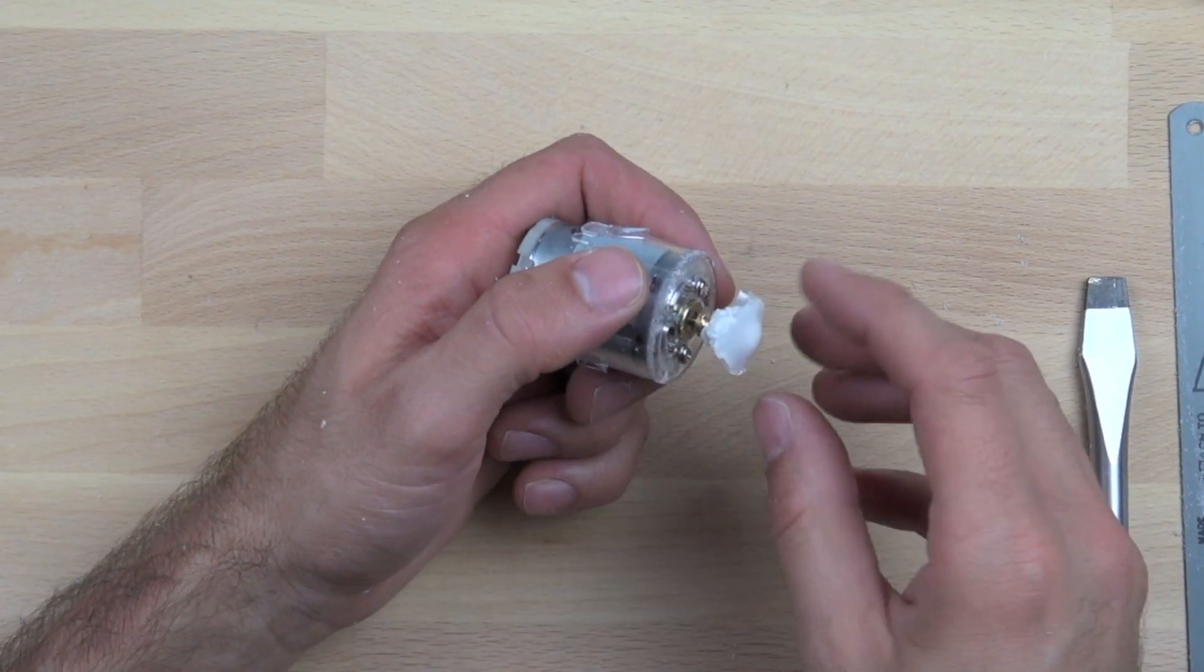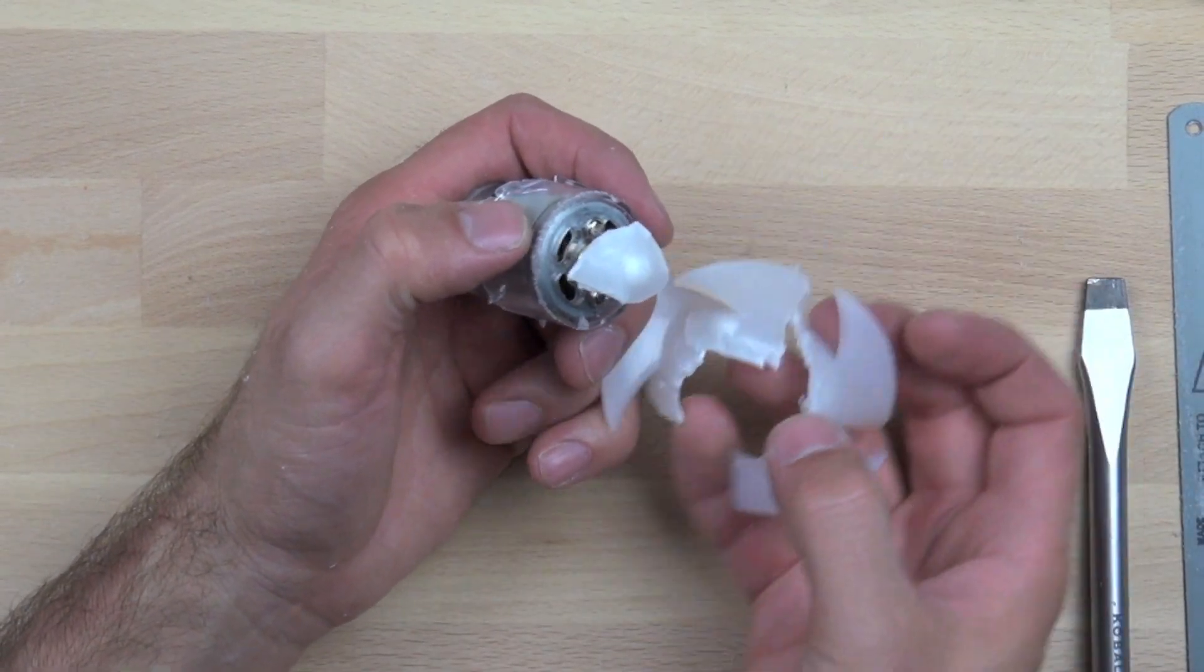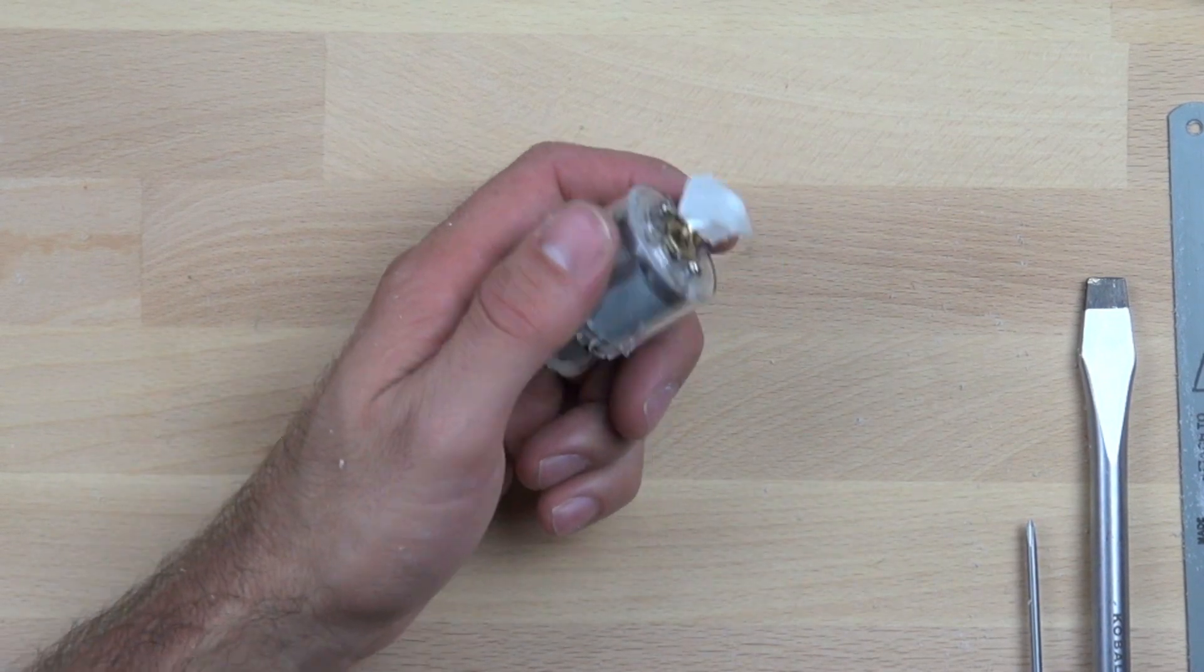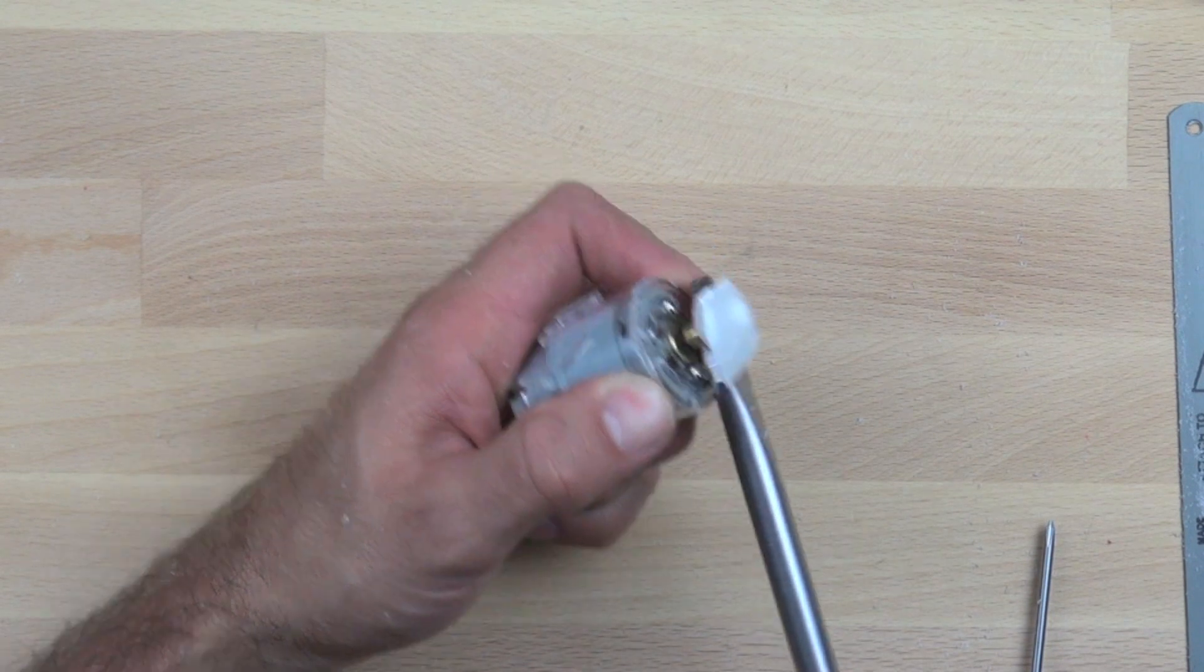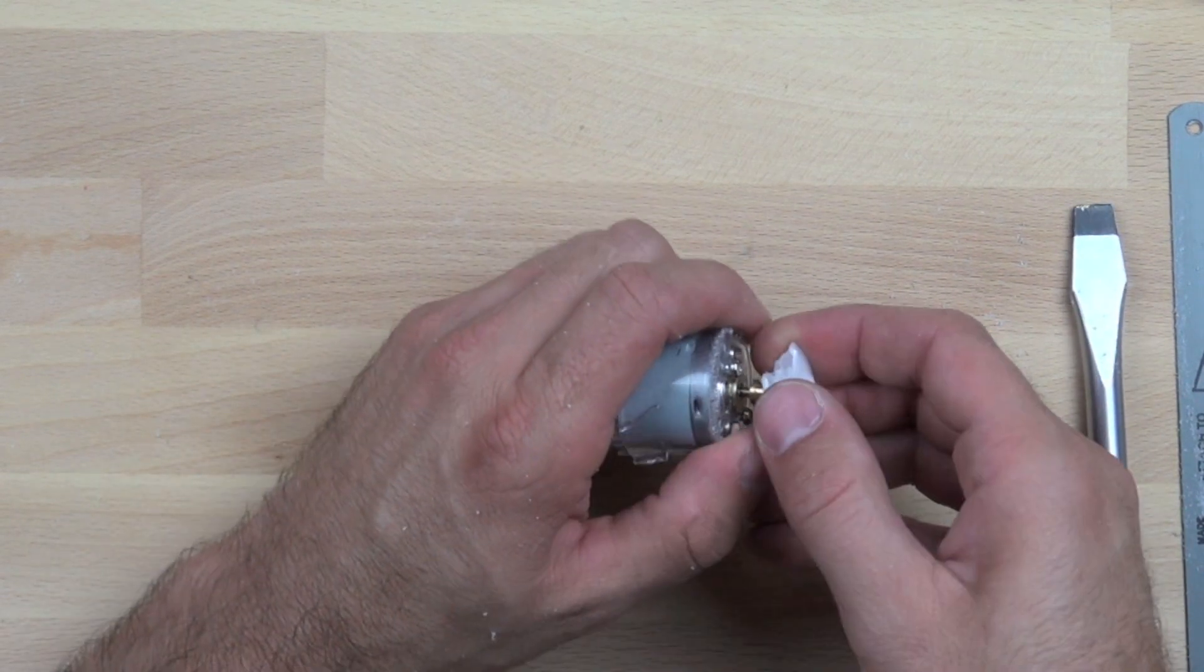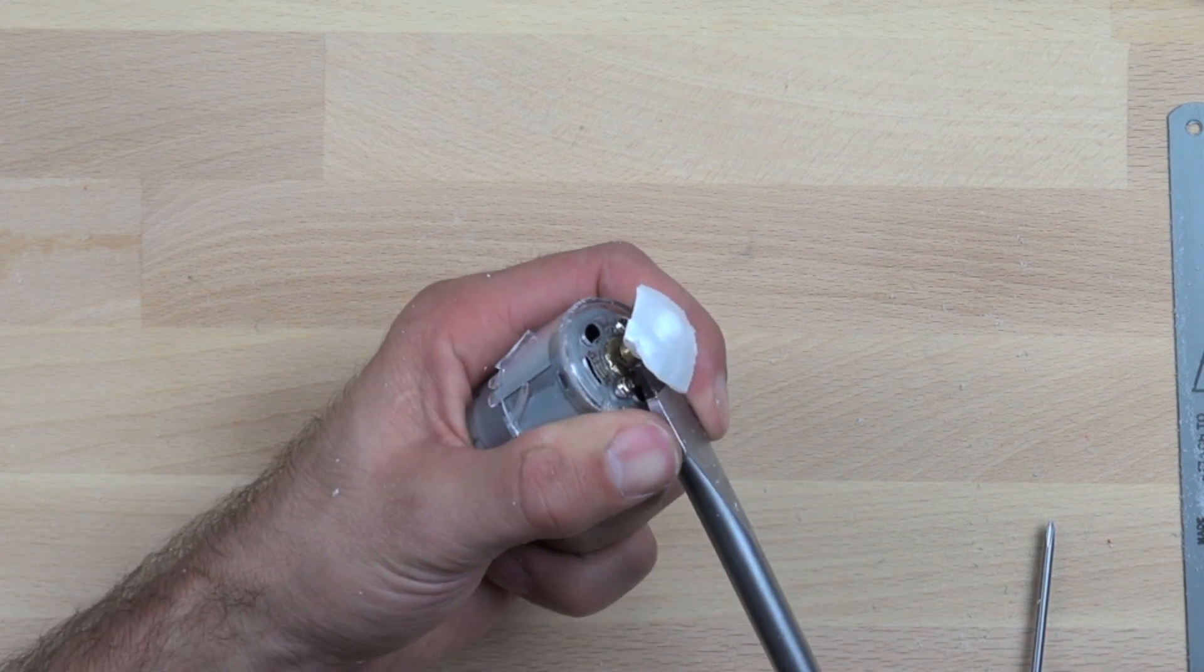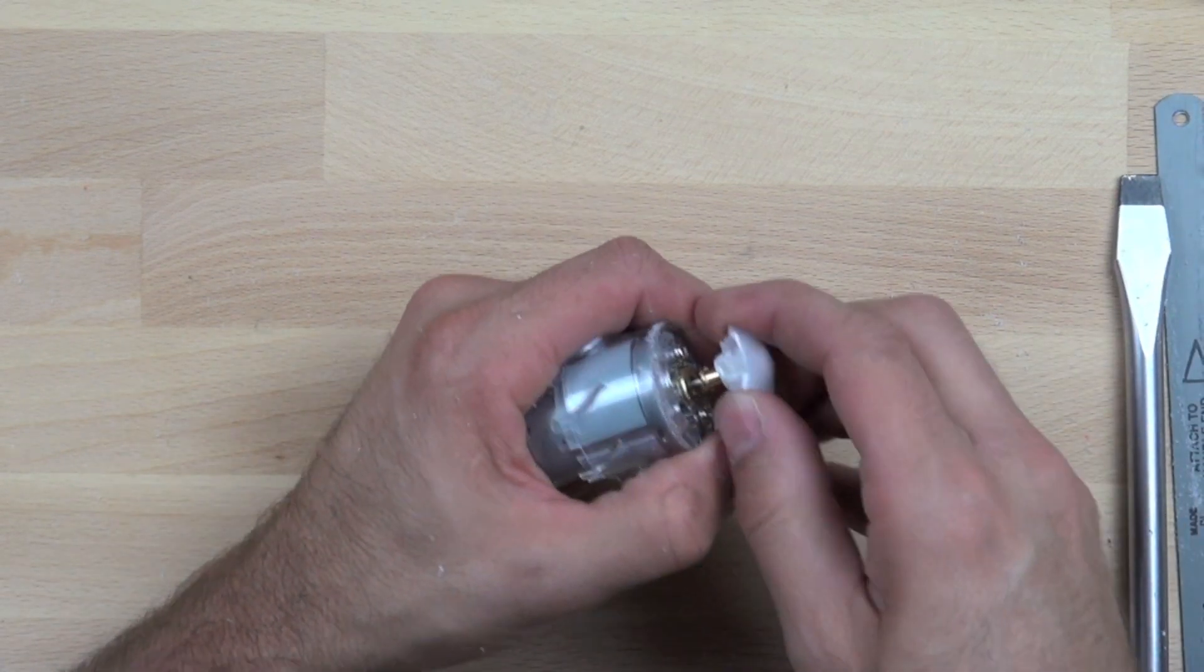So we've got our plastic propeller torn up pretty good and removed and we have a little piece left here. I'm going to see if we can pry that off with our screwdriver. There we go, we've got it loosened up.